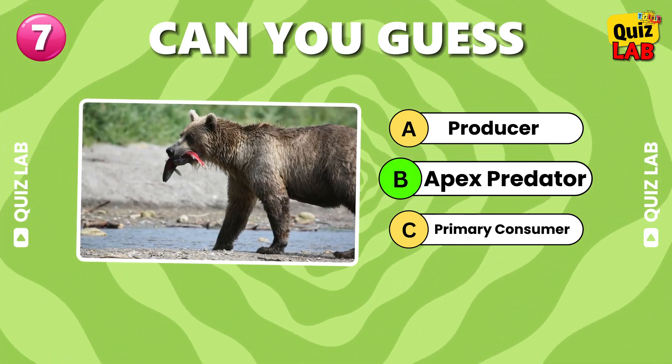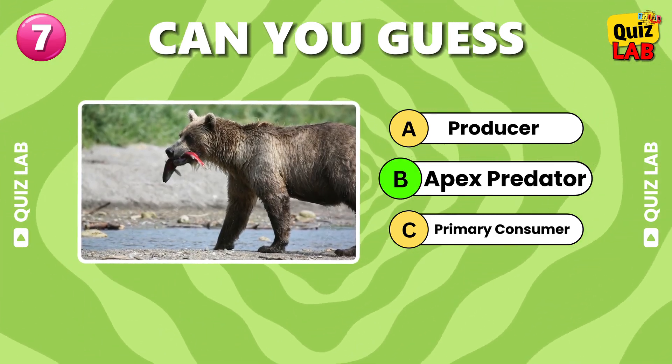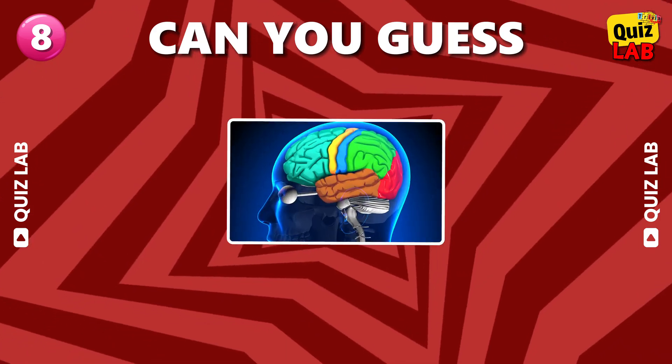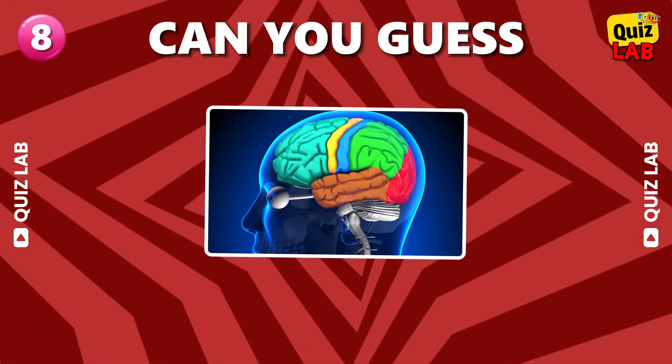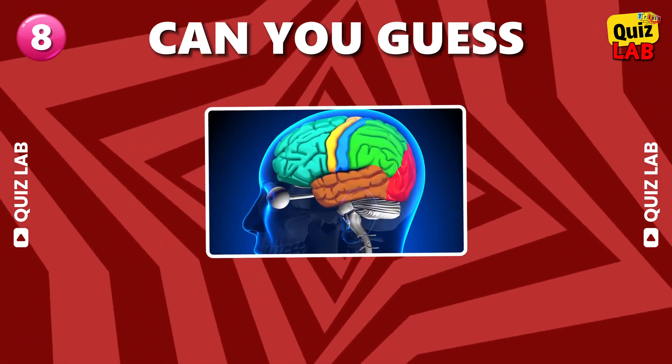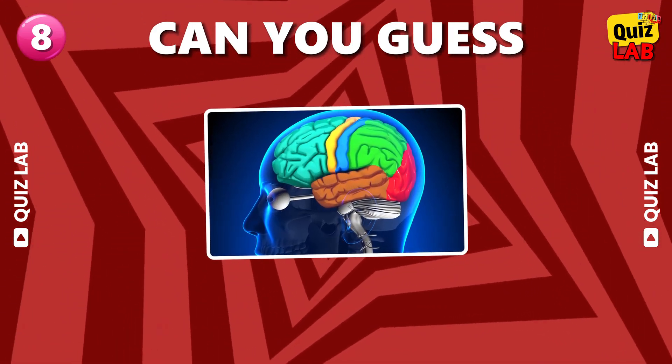Apex predator. Which part of the brain is responsible for complex thinking and decision-making?